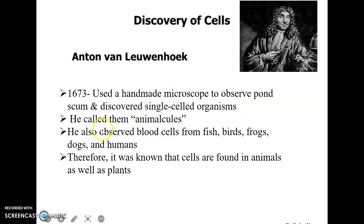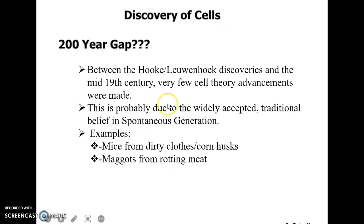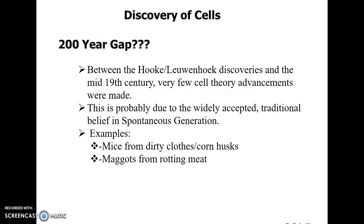Leeuwenhoek observed these cells also in blood cells from fish, birds, frogs, dogs, and humans. Therefore, it became known that cells are found in animals as well as in plants. Between Hooke and Leeuwenhoek's discoveries and the mid-19th century, very little cell theory advancement was made, probably due to the widely accepted traditional belief in spontaneous generation.